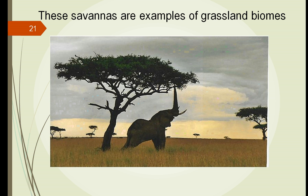The grassland biomes are savannas. We think of these in Africa with elephants, but we also have grasslands in the Midwest, prairies, and the steppes of Russia, filled with grasses. There are many interconnected food webs in these areas. The elephant can reach up high to get as much food as it wants, but as it walks through, its legs kick through the grasses and dislodge insects, so birds follow behind them to eat those insects. Grasses are very stingy with their nitrogen, so animals have to eat a large amount to get enough nitrogen. One of the reasons you see herds migrating is to get as much nitrogen as possible from the grass.